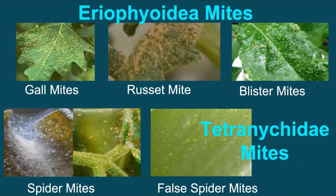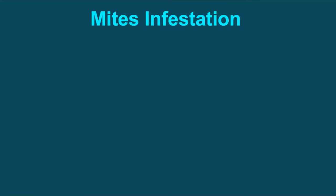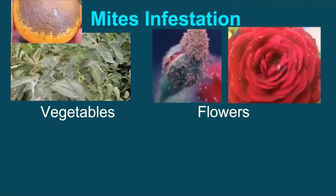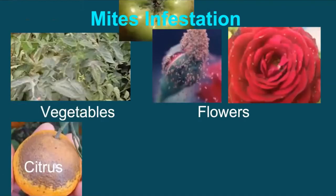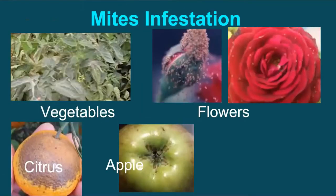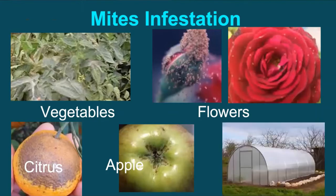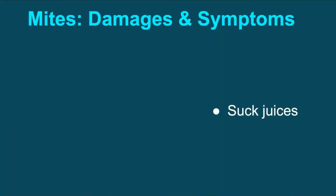Not only do the two categories differ in their nature and damages caused, but different control measures need to be adopted, especially in the case of biological options. Mites infest all field crops, vegetables, fruit crops, and flowers grown in summer and winter seasons, but damage on summer-cultivated crops under hot and dry conditions is particularly more. Even under polyhouse conditions, mite infestation on vegetables is quite common and damaging.